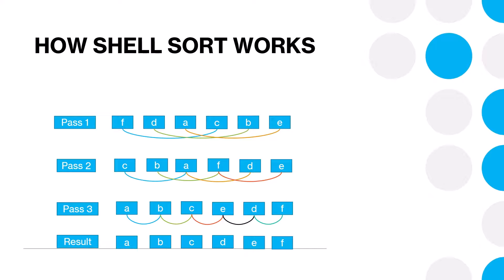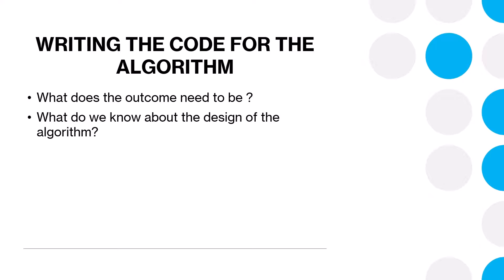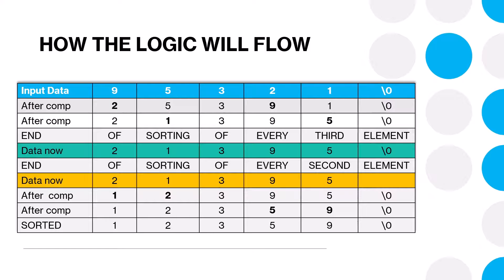That's how the Shell Sort works. How do we write the code for the algorithm? We know the outcome needs to be data sorted in alphabetical or ascending order. We've seen how the Shell Sort works and we need to incorporate that design into our code. Let's look at a visual to understand the logic flow.